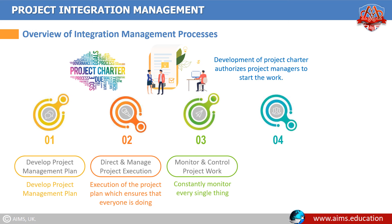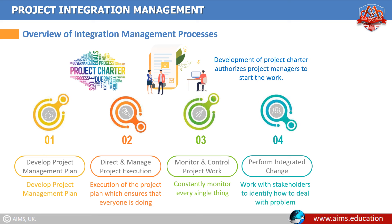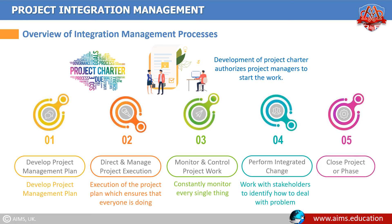Fourth process: perform integrated change control is the process when a problem is found. You have to work with stakeholders to identify how to deal with them. Note: finding a problem later is harder and more expensive to fix. Fifth process: finally, you close the project or phase. Make sure you document everything, especially the lessons you and your team have learned along the way.